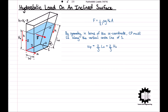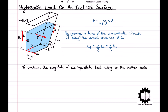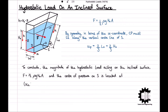So, we can conclude by saying that the magnitude of the hydrostatic load acting on the inclined surface is f equals one half rho g h0 a, and the centre of pressure on s is located at xp, hp equal to one half w, two thirds h0.